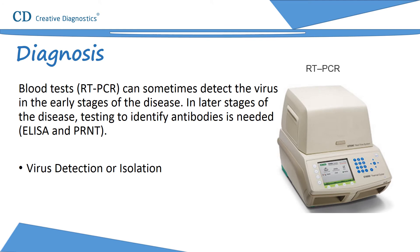Yellow fever is difficult to diagnose, especially during early stages. Severe disease can be confused with severe malaria, leptospirosis, viral hepatitis (especially fulminant forms), other hemorrhagic fevers, infection with other flaviviruses such as dengue hemorrhagic fever, and poisoning. RT-PCR can sometimes detect the virus in early stages. In later stages, antibody testing is needed via ELISA and PRNT. Viral antigen or nucleic acid can be identified in tissue specimens using immunohistochemistry, ELISA antigen capture, or PCR. The virus may be recovered from blood in the first four days after onset or from post-mortem tissue by intracerebral inoculation of mice or by use of cell lines.